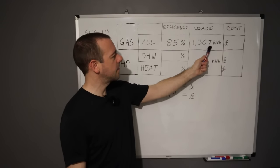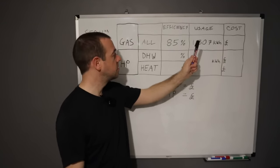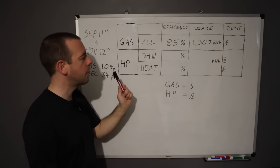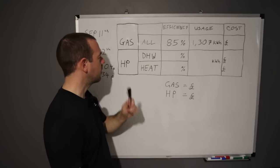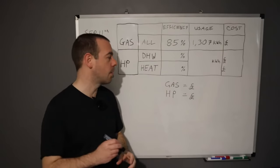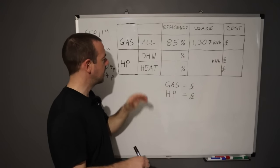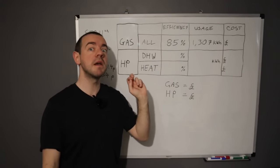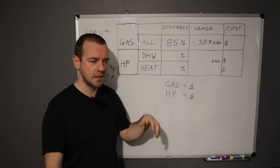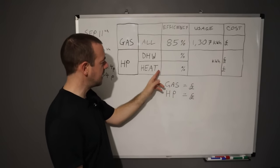This is the amount of kilowatt hours we used in gas during effectively a two month period: 1,307 kilowatt hours. Now let's look at the efficiency of the heat pump which is separated into two different categories.